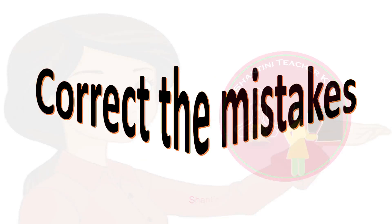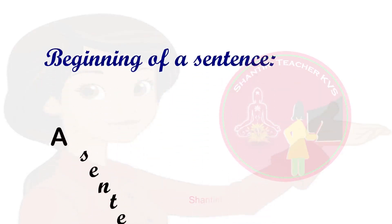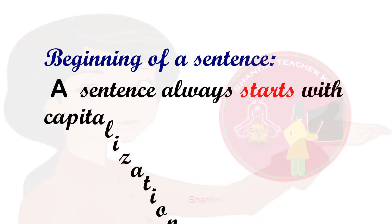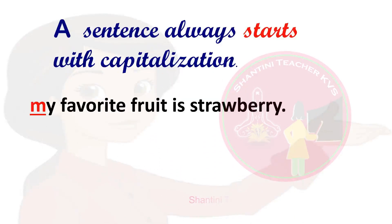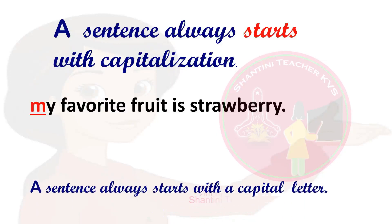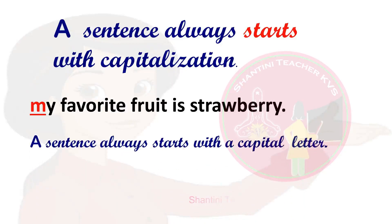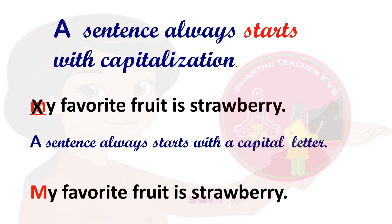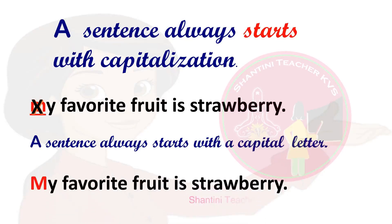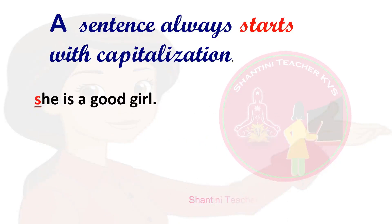We learn through mistakes. Here we have a few examples where you can learn the proper use of capital letters by correcting the mistake. Remember, a sentence always starts with a capital letter. 'My favorite fruit is strawberry.' What is the mistake in this sentence? Yes — a sentence always starts with a capital letter, but this sentence starts with a small letter. How can we correct it? By uppercasing the first letter — that is, by using capital letter M.